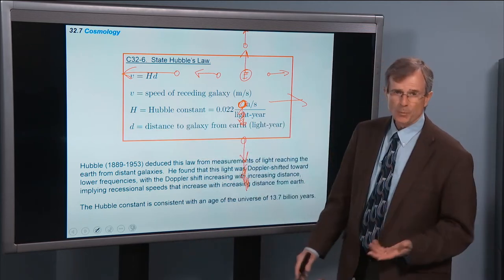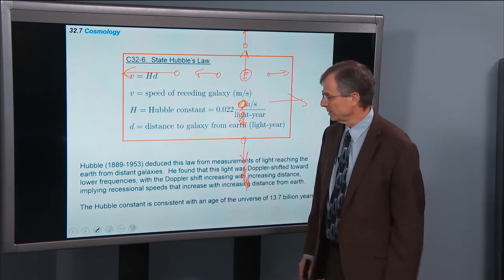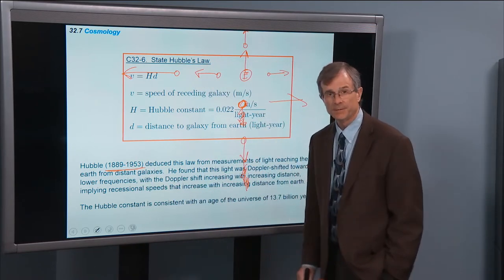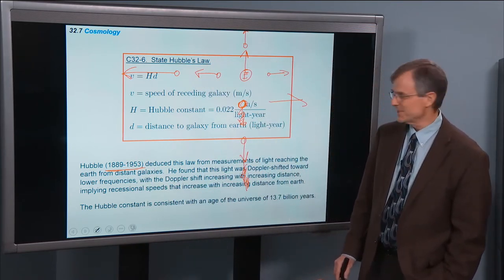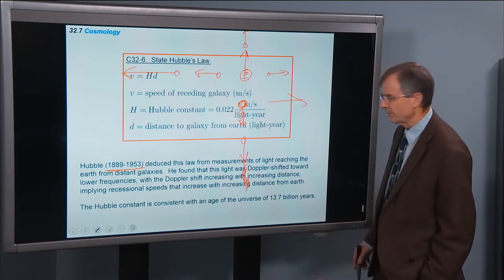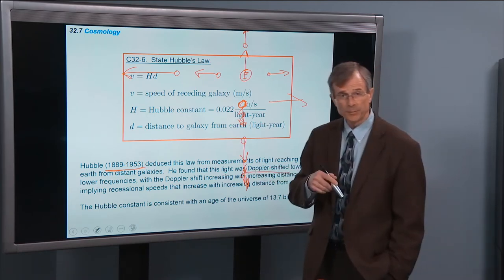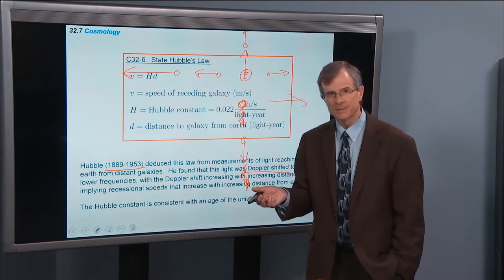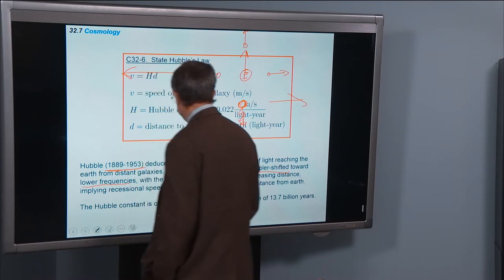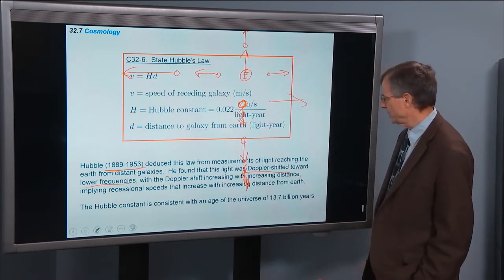And this is the Hubble law. And this is one thing that made Hubble famous and one reason why the Hubble Space Telescope was named after him. He looked at measurements of light reaching the Earth from distant galaxies. He found the light was Doppler shifted toward lower frequencies, longer wavelengths, redshift, lower frequencies.